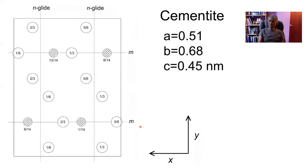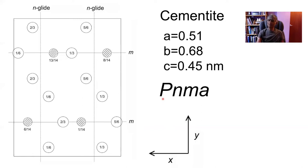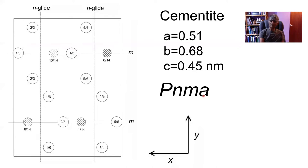Cementite also has a large unit cell in its crystal structure, much larger than that of ferrite and austenite. There are 12 iron atoms and 4 carbon atoms in the lattice and the space group is PNMA — P standing for primitive, N for the N glide planes whose normals lie along the x-axis, M for the mirror planes whose normals lie along the y-axis, and the A glide is an operation parallel to the z-axis, with the translation also parallel to the z-axis.